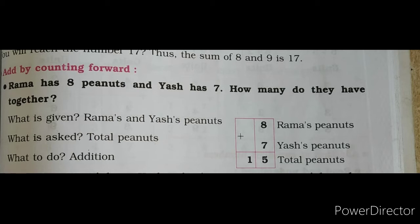8 is Rama's peanuts and 7 is Yash's peanuts. Children, always remember that in examples you have to find out what is given, what is asked, and what to do. What is given we find from the example itself. What is asked means what they are going to ask — how many peanuts together. And what to do — addition or subtraction. Always remember that 'together' means plus, so here you have to do the addition.